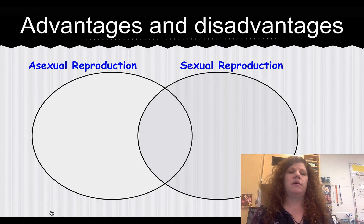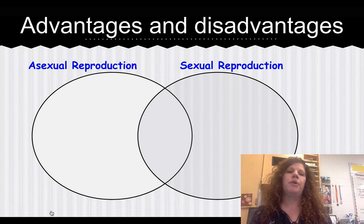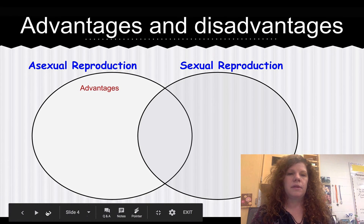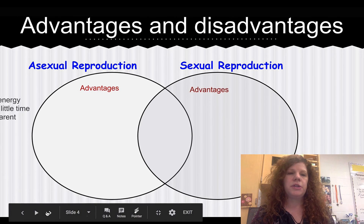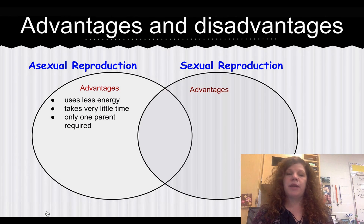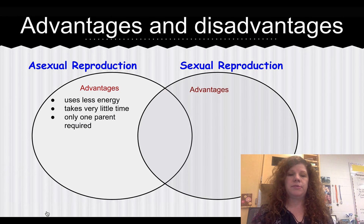This is important: the advantages and disadvantages of asexual reproduction versus sexual reproduction. The advantages of asexual reproduction — remember it only takes one parent, the offspring are clones, it uses less time and energy, and only one parent is required.